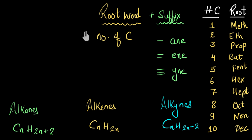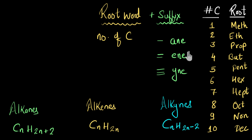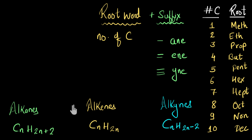In this video, we saw how to name hydrocarbons. First, give a root word depending on the number of carbon atoms present. Second, give a suffix depending on whether it belongs to the alkane, alkene, or alkyne family. If given the structure, look for double or triple bonds to find the suffix. If given the molecular formula, recall the general molecular formulas for alkanes, alkenes, and alkynes to figure out the suffix.